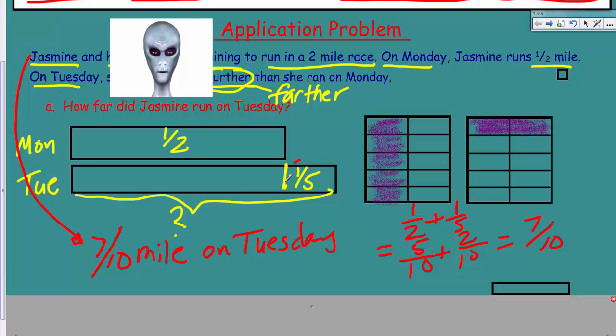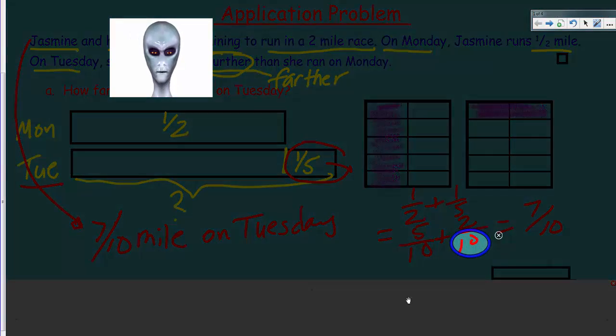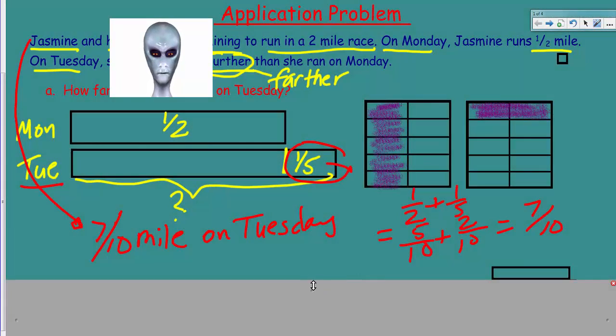So now we can solve our problem. So we're going to take our one half plus one fifth was what our initial. Now we know is the same as five tenths based on our new area model. And then we have our two tenths over here. There's two of them. And just like that, seven tenths. Now that means that, based on this, that Jasmine actually ran seven tenths of a mile on Tuesday. And this is really, really important that we look for those like units.